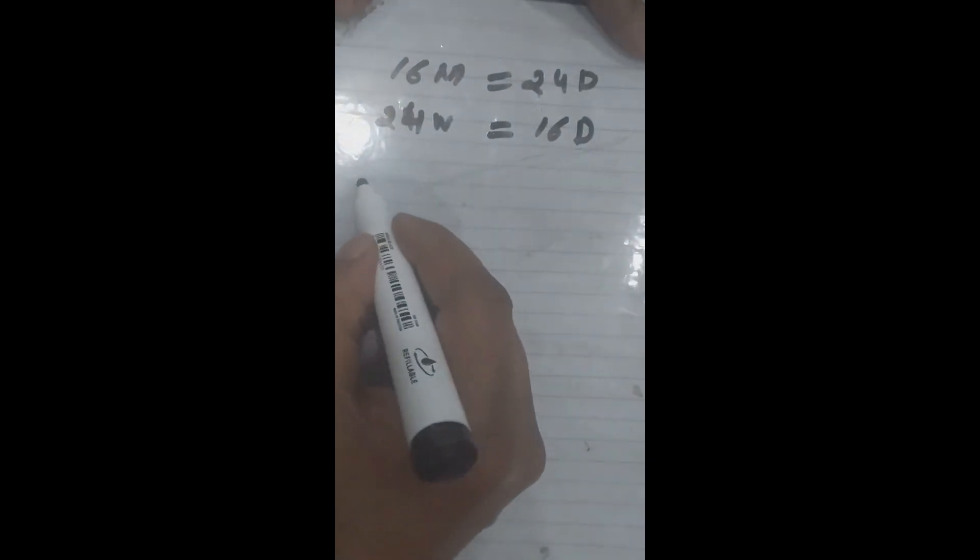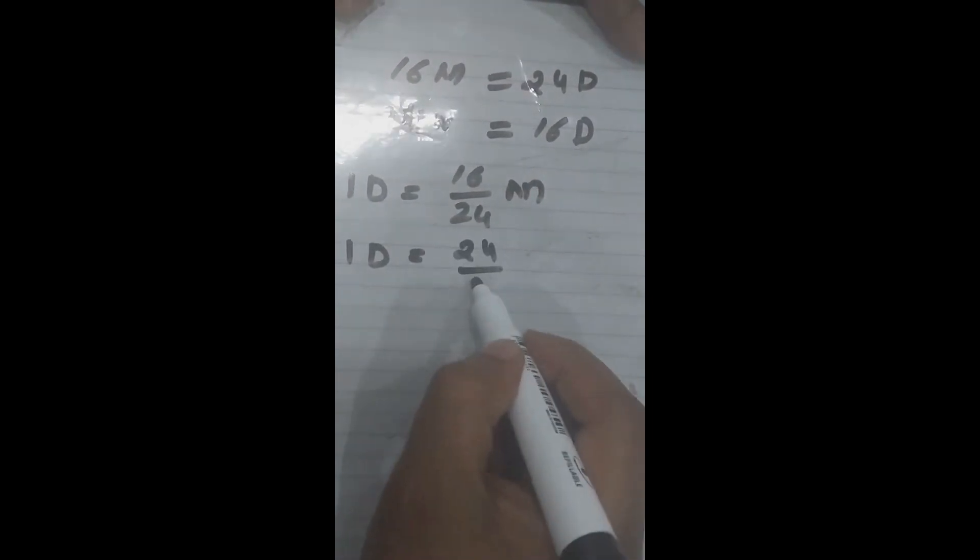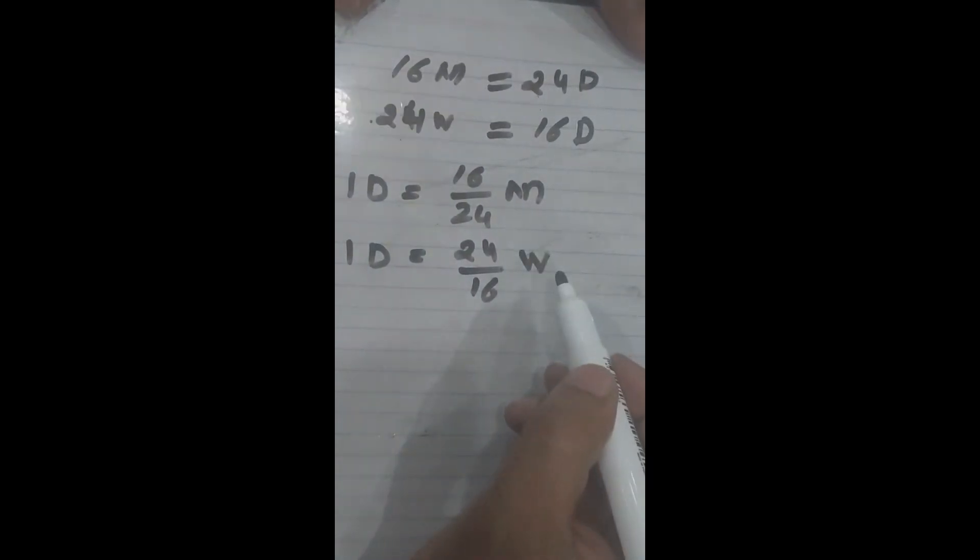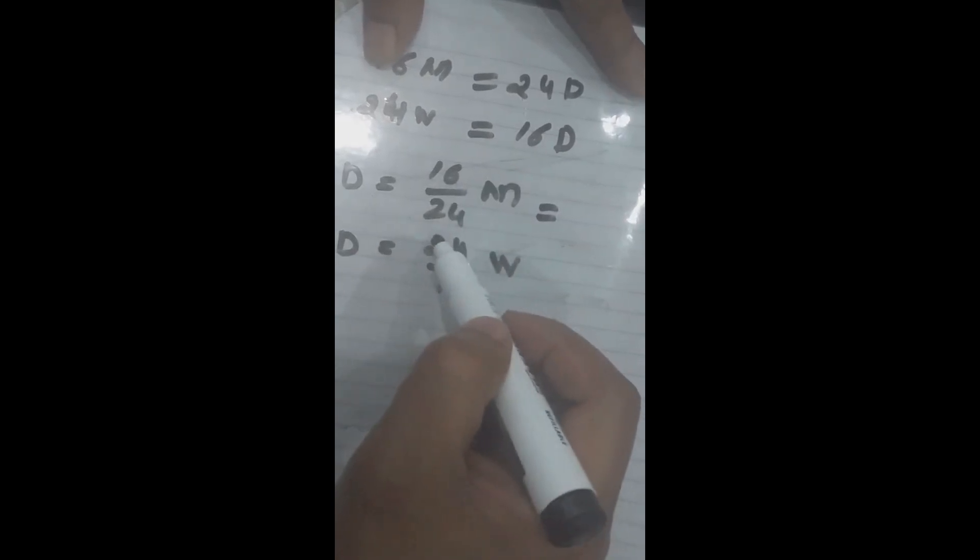From there we can say that 1 day is equal to 16 over 24 men, and from this equation we can say 1 day is equal to 24 over 16 W's. After simplifying, we can cancel by the table of 8, and it will be 2 by 3 here and 3 by 2 W here.